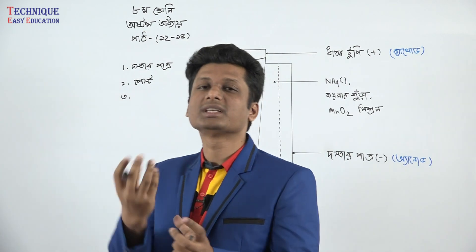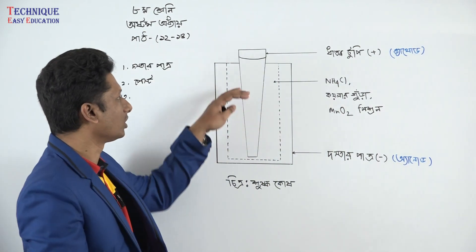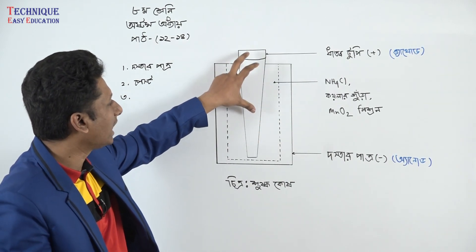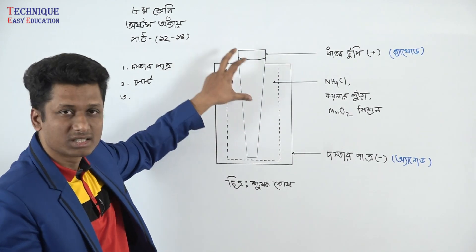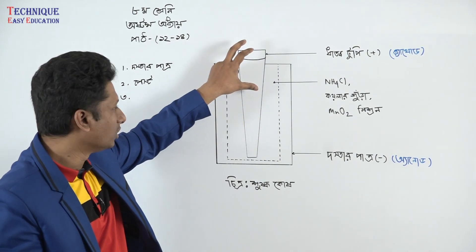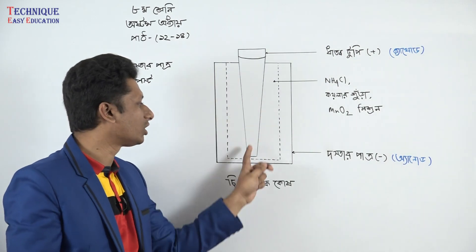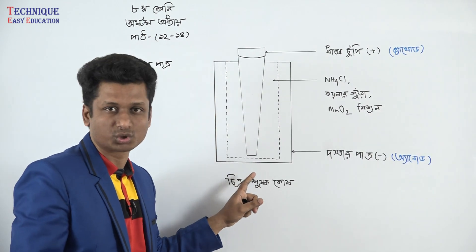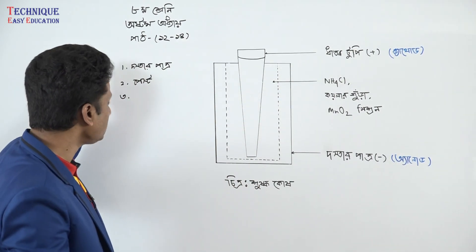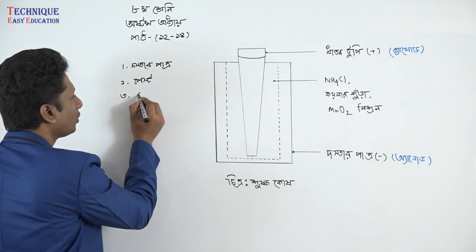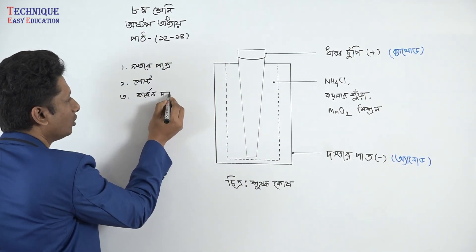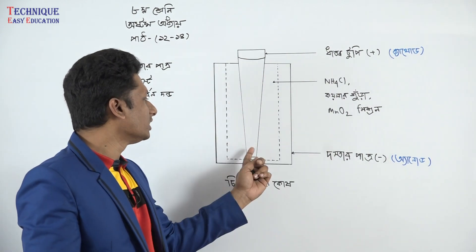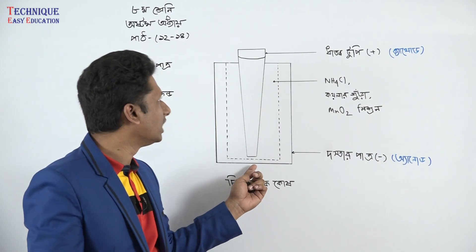What do you do with the paste? One carbon rod. First you apply the paste, then you place the carbon rod. This is the step-by-step process.